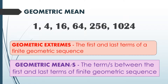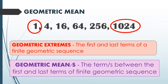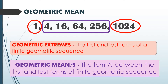Let's have this example: 1, 4, 16, 64, 256, and 1024. On this finite geometric sequence, 1 and 1024 are the geometric extremes, and 4, 16, 64, and 256 are the geometric means.